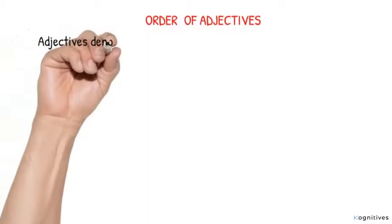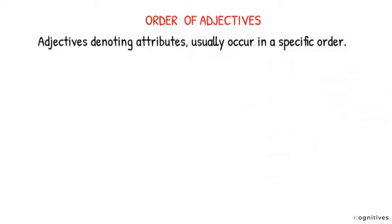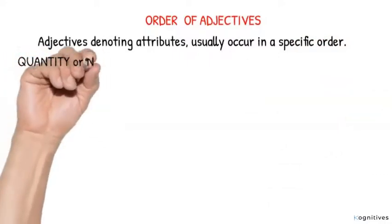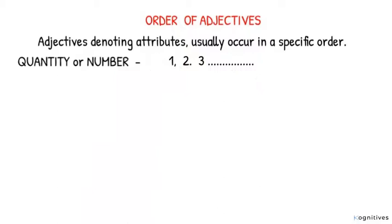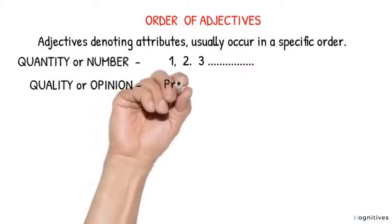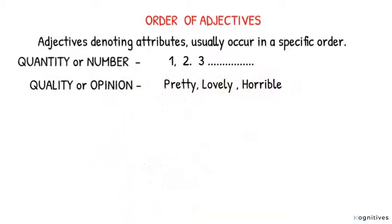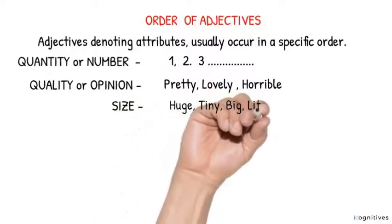The next is order of adjectives. How to order adjectives in English. Adjectives denoting attributes usually occur in a specific order. The order is: one, quantity or number, this could be one, two, three and so on. Two: Quality or opinion, this could be pretty, lovely, horrible. Number three: Size, it could be huge, tiny, big, little.